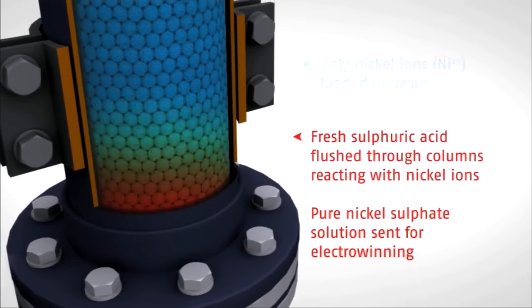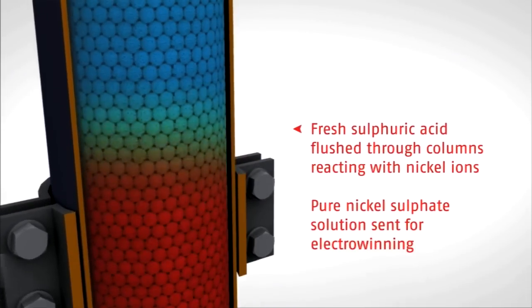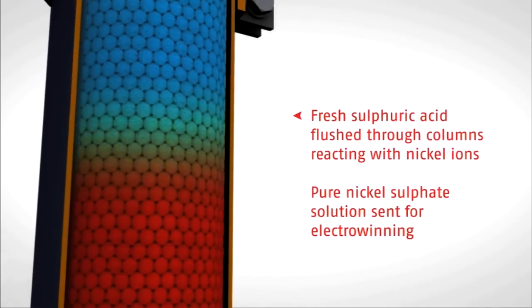The remaining PLS is drained from the columns and fresh sulfuric acid is pumped upwards, washing the nickel off the resin.